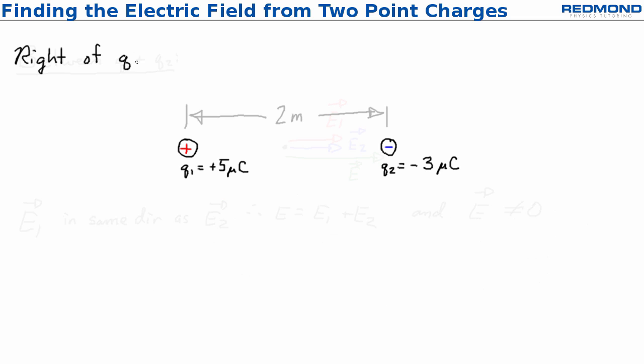Right of Q2, E1 points away from the positive Q1, to the right, and E2 points towards the negative Q2, to the left. Nice! These are in opposite directions.